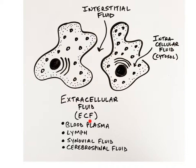The extracellular fluid, or ECF, is found outside of the cells. Interstitial fluid is the ECF located in between tissue cells and is considered to be the body's internal environment. Chemical substances such as oxygen, carbon dioxide, glucose, and ions are continually moving back and forth between the interstitial fluid and the blood plasma in order to allow body cells to properly function.